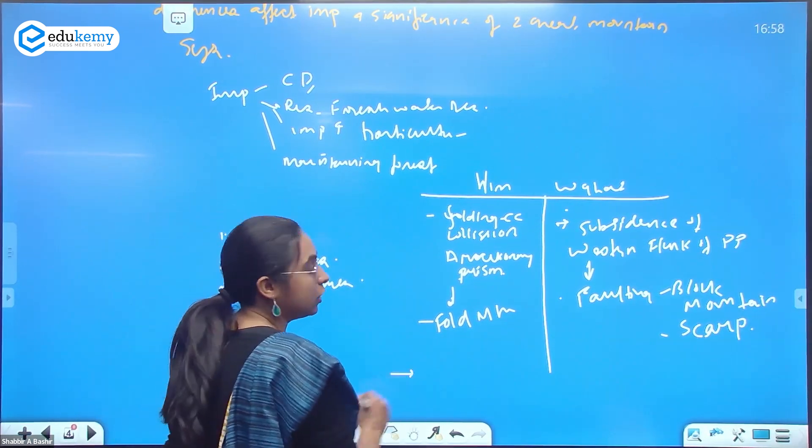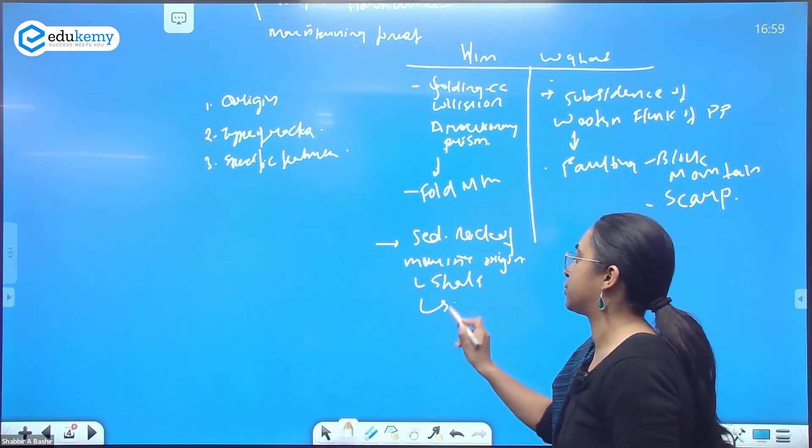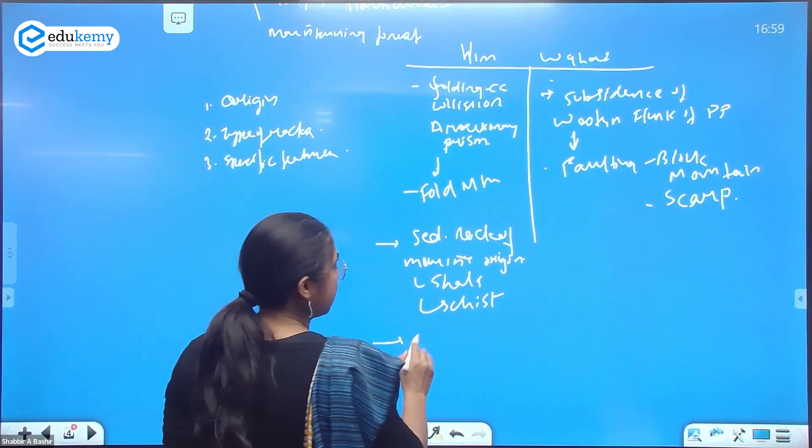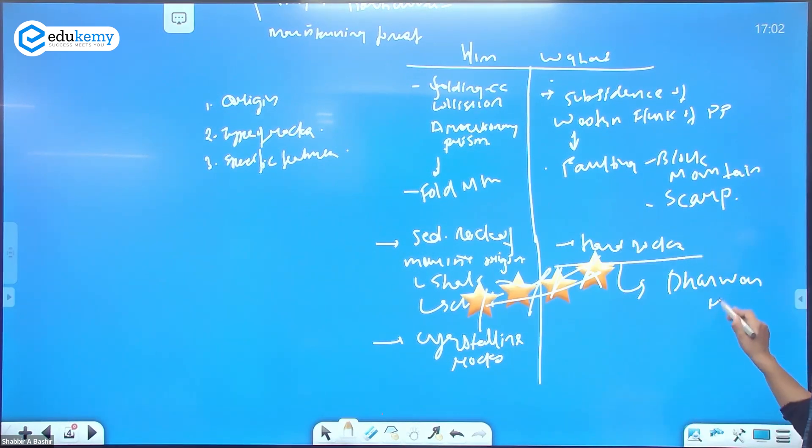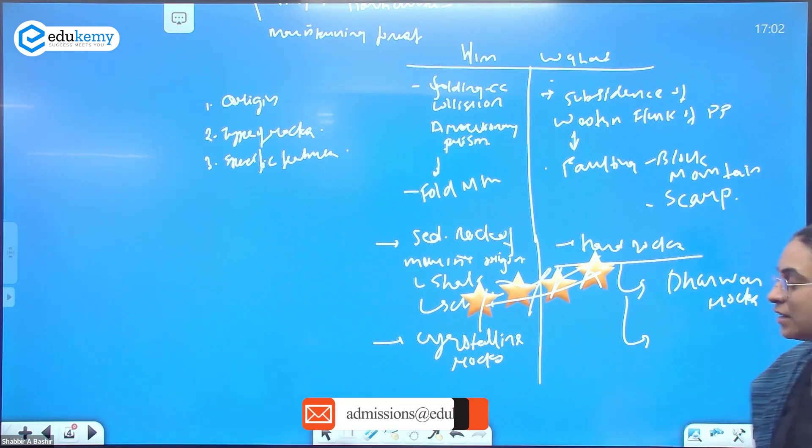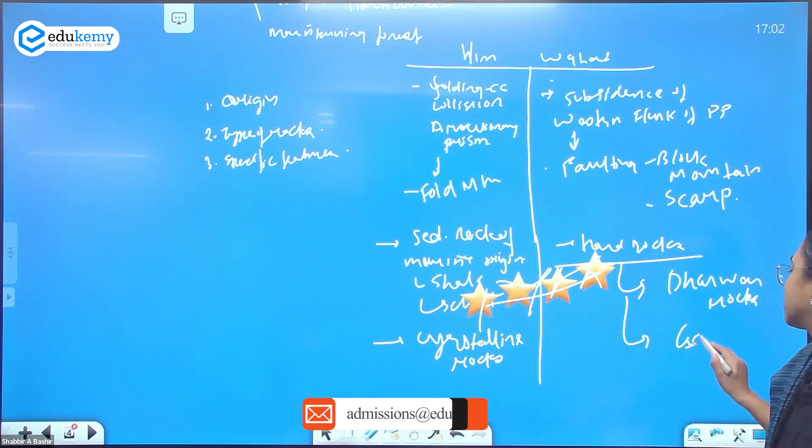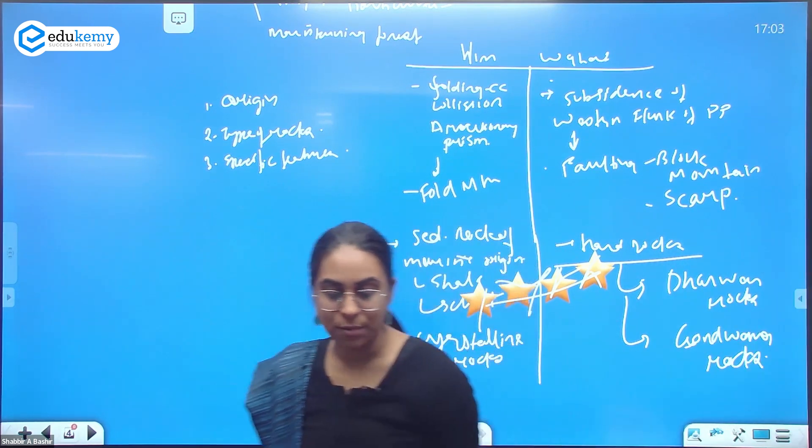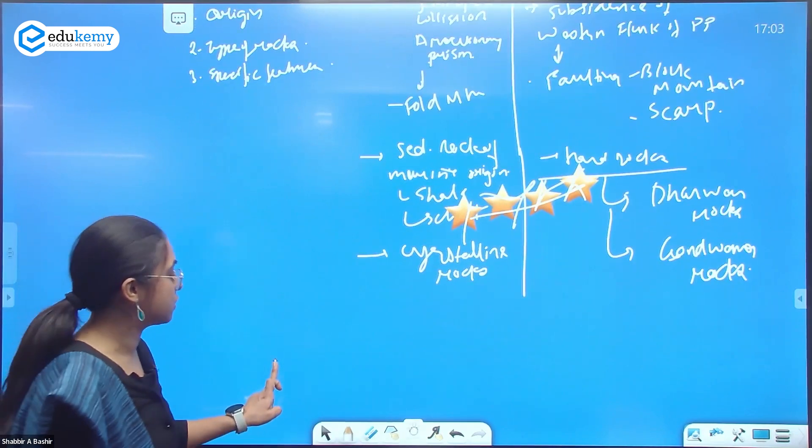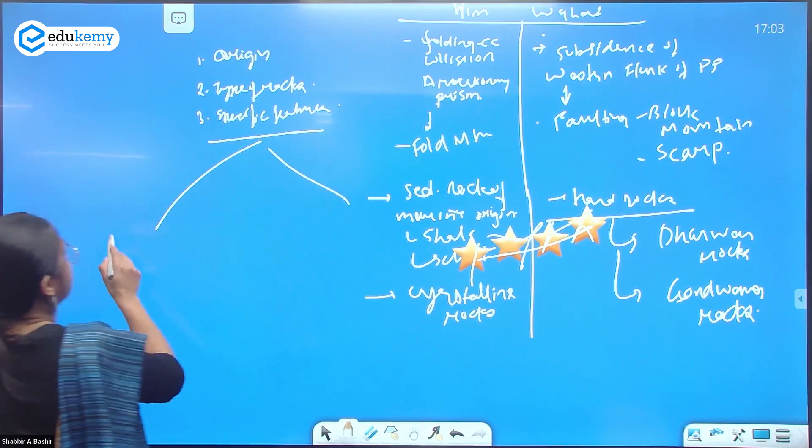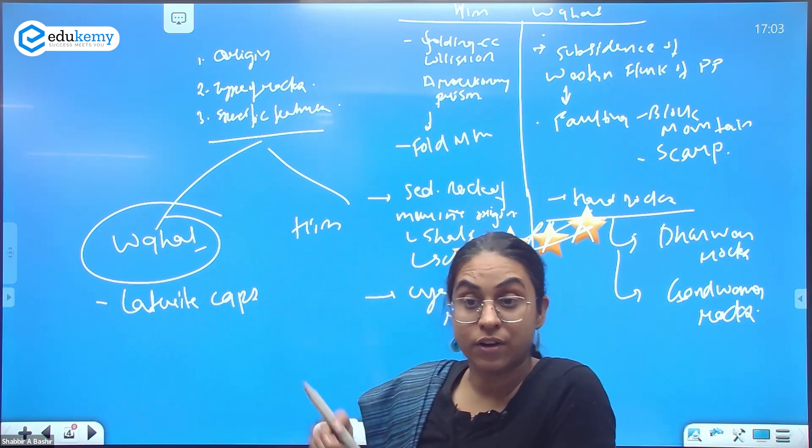In Himalayas you talk about they are formed from sedimentary rocks of marine origin. You have shale, shist, and crystalline rocks. With respect to Western Ghats, these are hard rocks. There are Dharwar rocks alongside the Western Ghats. Along your Narmada, along the Tapi you also have Gondwana rocks. Now know about some specific things for Western Ghats and for Himalayas.